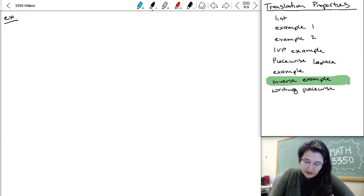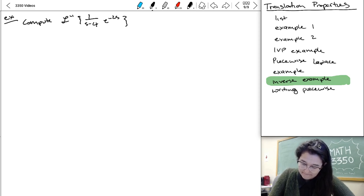So we're gonna compute L inverse of one over S minus four times e to minus two S and L inverse of S over S squared plus nine times e to minus pi over two times S.